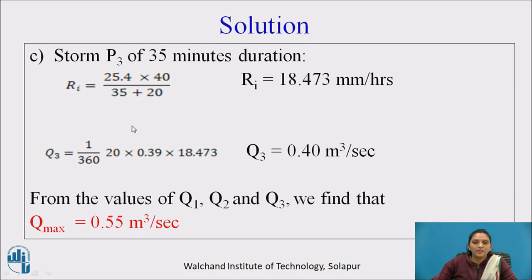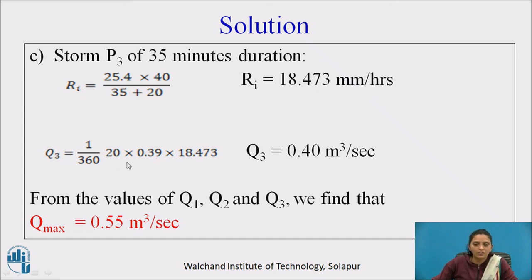For storm P3, duration is 35 minutes, so A = 40 and B = 20 (same as for storm P2). Putting values into the formula gives R_i = 18.473 mm/hour. Discharge Q3 = 0.40 m³/s. Comparing Q1, Q2, and Q3, the maximum discharge is found for storm P1, which is 0.55 m³/s.